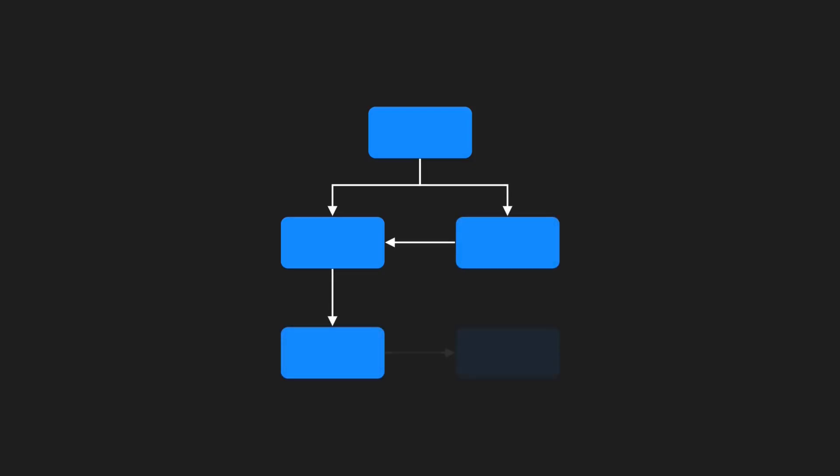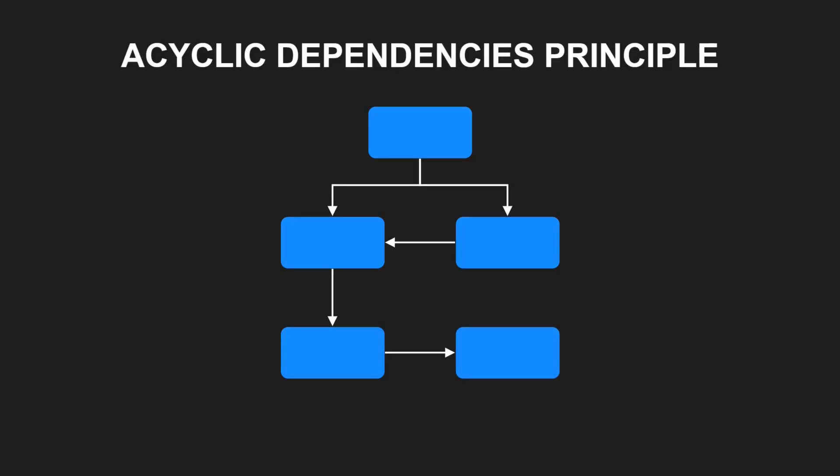Components are rarely completely independent. They often depend on each other, allowing us to build complex software from smaller pieces. These relationships can be visualized as a directed graph, where the edges point in the direction of usage. The acyclic dependencies principle states that we should not allow any cycles in such a component dependency graph.